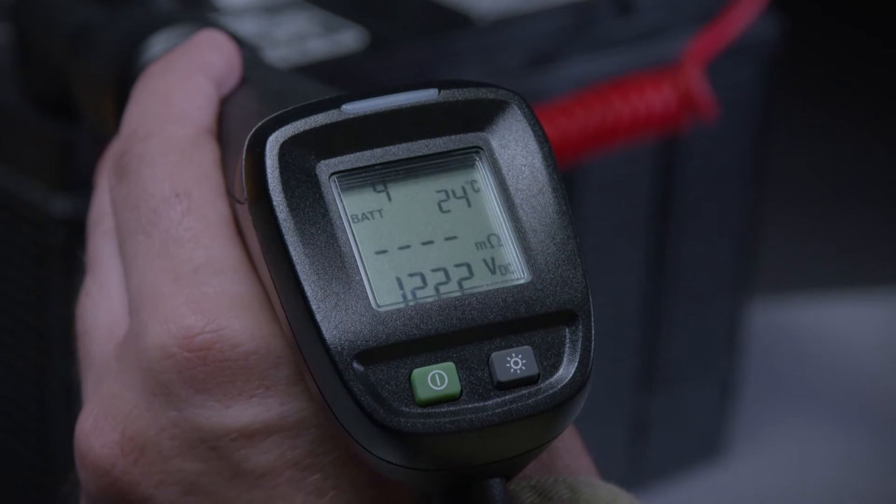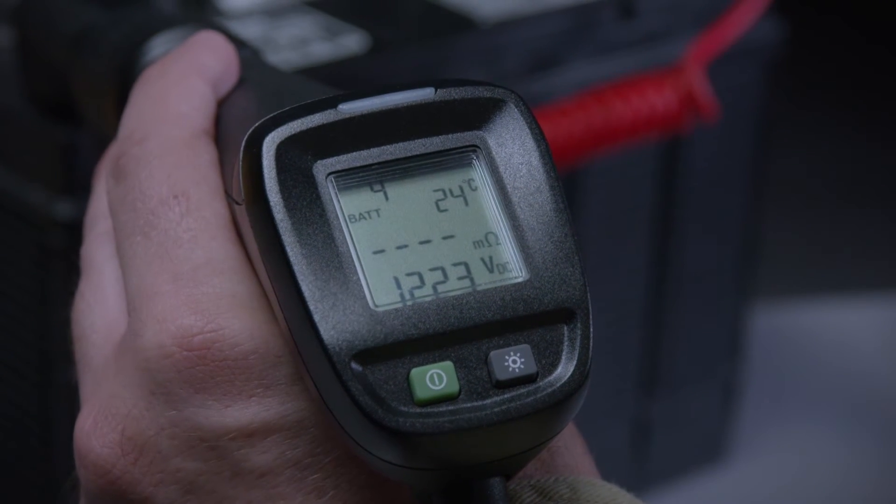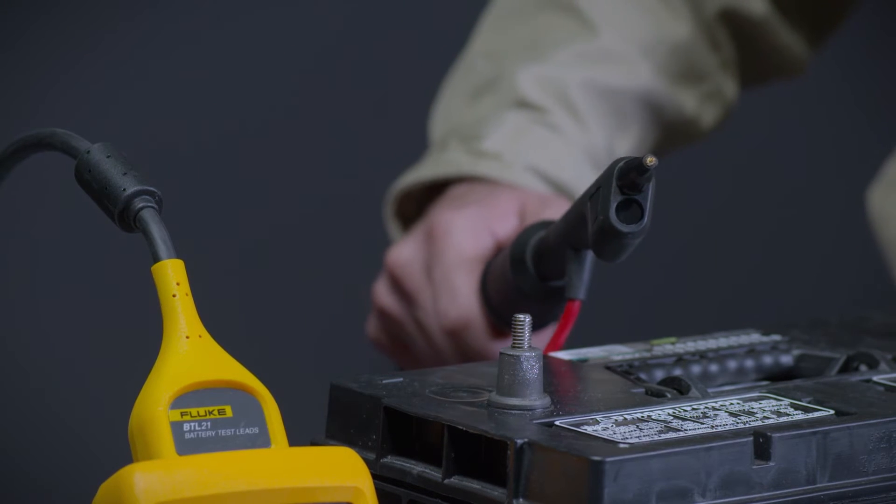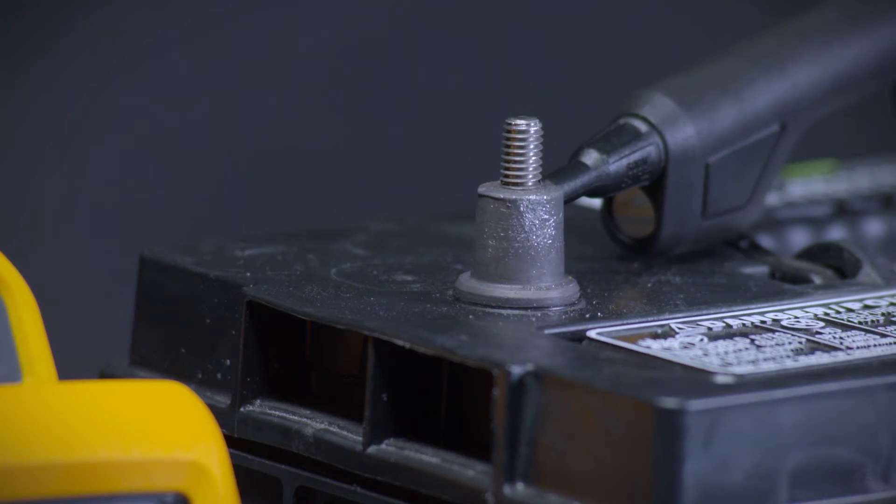Notice on the display the temperature measurement. The temperature is measured with the temperature sensor found at the tip of the negative probe. This measures the temperature at the terminal, which is a recommended method for checking battery temperature.